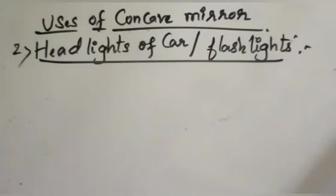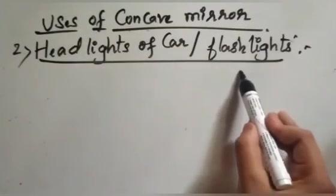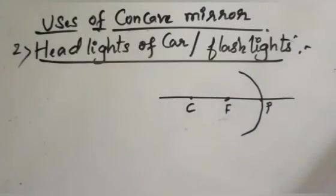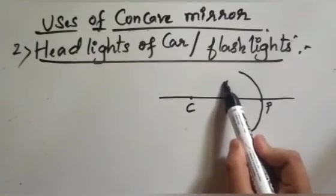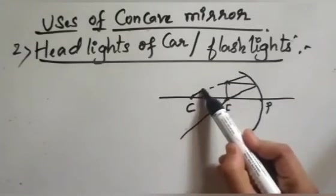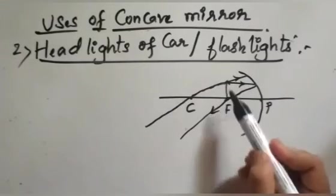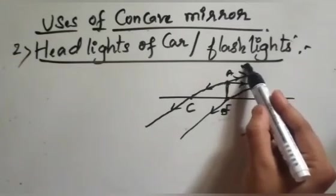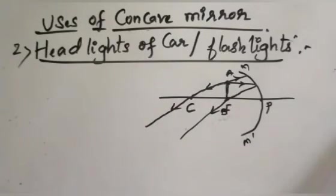The next important application of a concave mirror is in the headlights of a car or in flashlights and torch lights. A concave mirror is used in these devices. Consider the concave mirror with its pole, principal focus, and center of curvature. When an object is kept at the principal focus, and a ray of light passes through the center of curvature, after reflection it travels back along the same path.